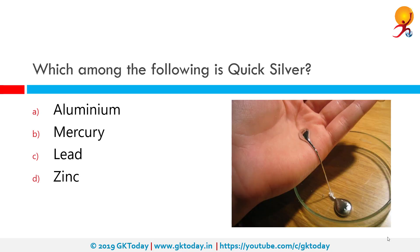Which among the following is Quicksilver? The correct answer is Mercury. Mercury is a chemical element with symbol Hg and atomic number 80. It is commonly known as Quicksilver and was formerly named Hydrargyrum.